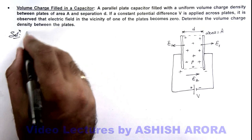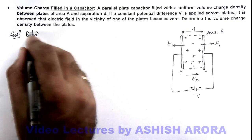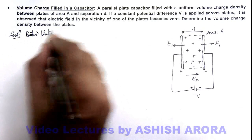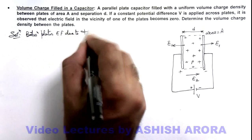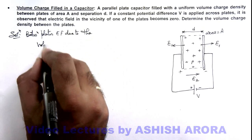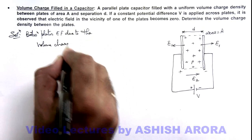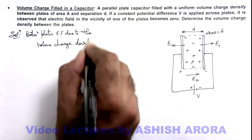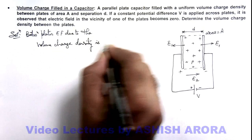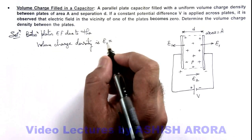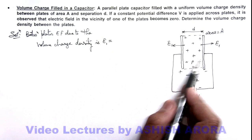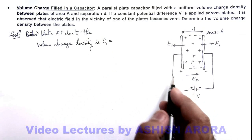Between the plates, the electric field due to the volume charge density—this electric field which we are denoting by E₁—can be directly written as the electric field due to a thick sheet of charge.